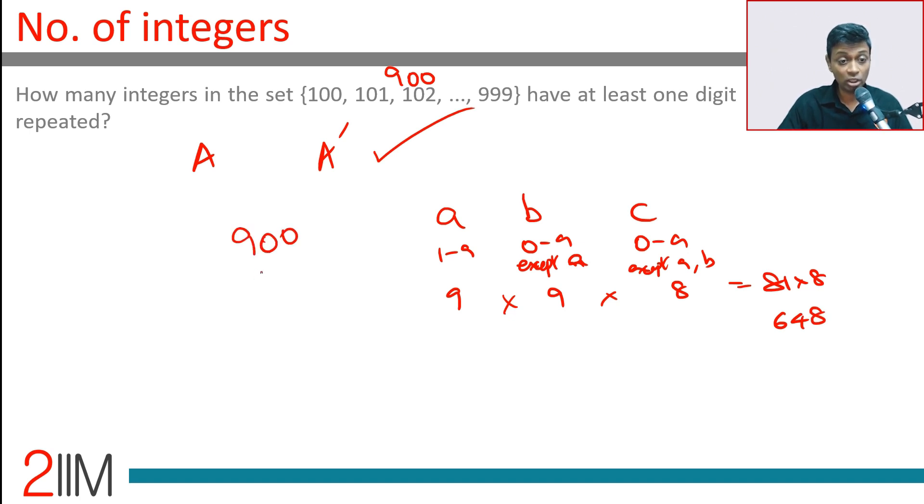The 900 numbers totally, of which 648 have no two digits the same, they have distinct digits. The remaining 252 is the answer we are looking for, having at least one digit repeated.